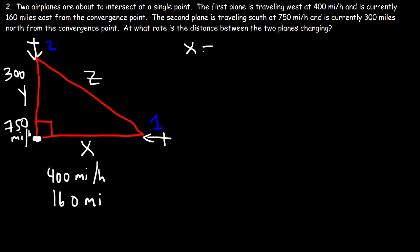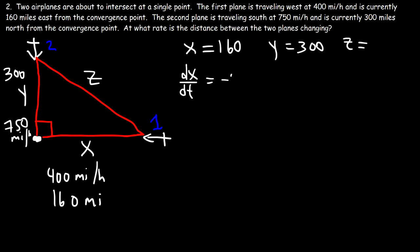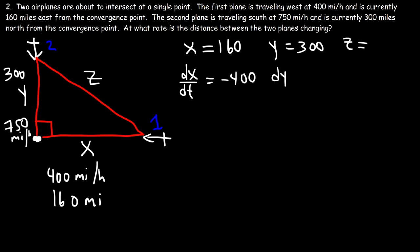X equals 160 and Y equals 300. Now, dx/dt is negative 400 because as the first plane travels toward the convergence point, X is decreasing. Similarly, dy/dt is negative 750 because Y is also decreasing as the second plane travels south. The goal is to calculate dz/dt.